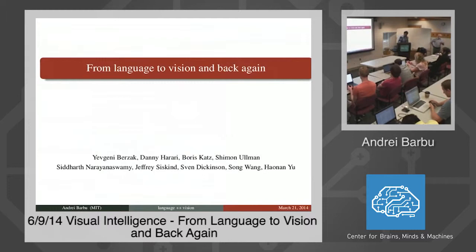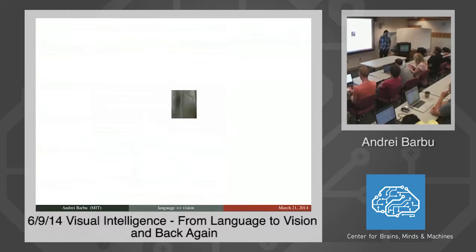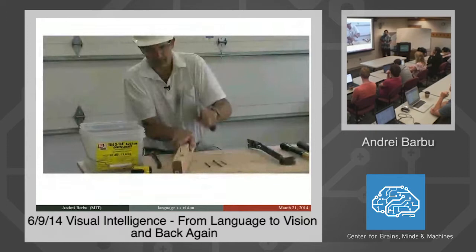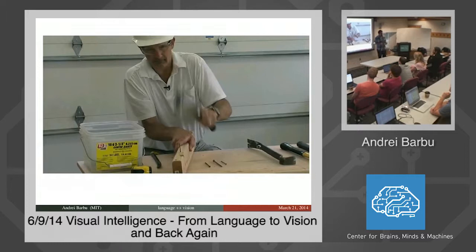Hello, everyone. I'm Andre. Let's start with a little off-the-cuff psychophysics. This is a more extreme version of what Shimon talked about. Who can tell me what this object is? Patrick says it's a cat. Shimon showed you examples where if you got parts of objects, you couldn't recognize them. This is an example where you actually have the entire object, and you can't recognize it until you see the context. The reason why you can recognize this as a hammer is because you see someone hammering with it. Their pose tells you what the object is.